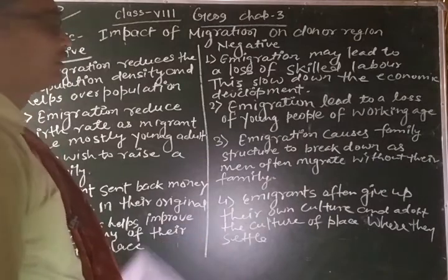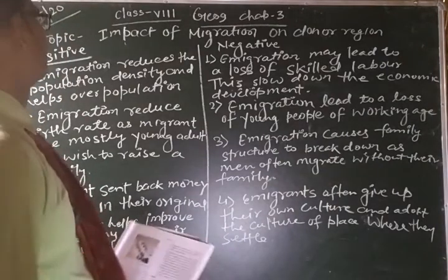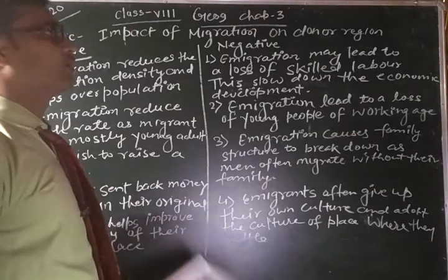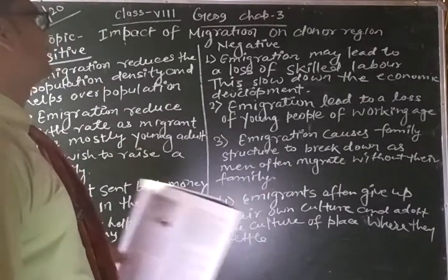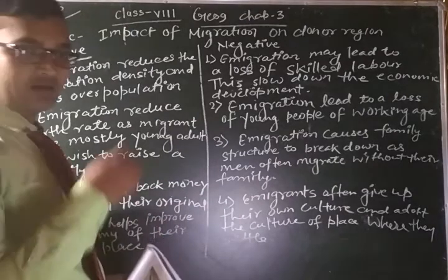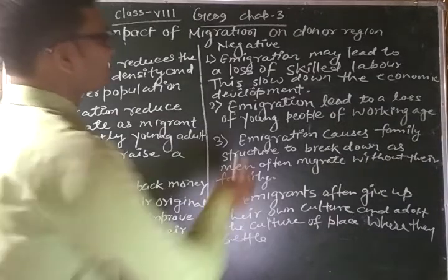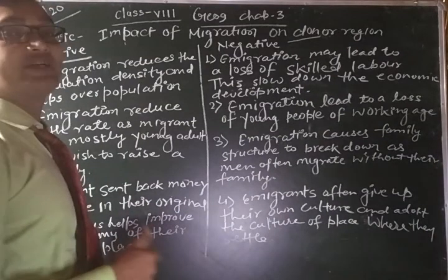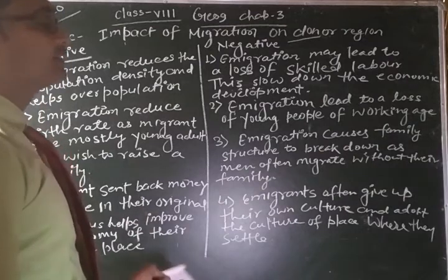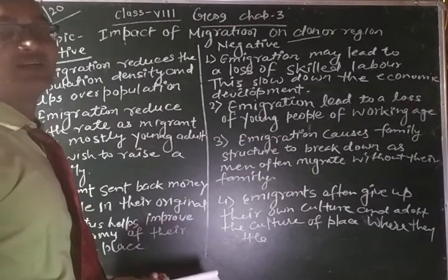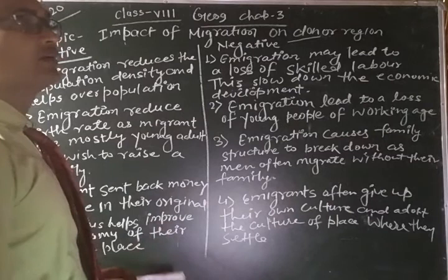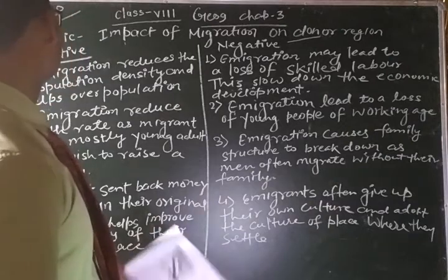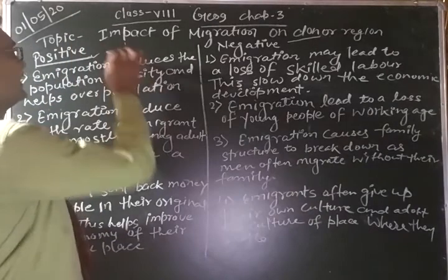Hello students, today we are going to discuss Geography Class 8, Chapter 3 — the impact of migration on donor regions. In the previous video we talked about the important impacts of migration, but particularly we are going to discuss the impact on the donor region, and after that we will talk about the impact on the receiver region. Donor regions are regions which send immigrants to other countries.